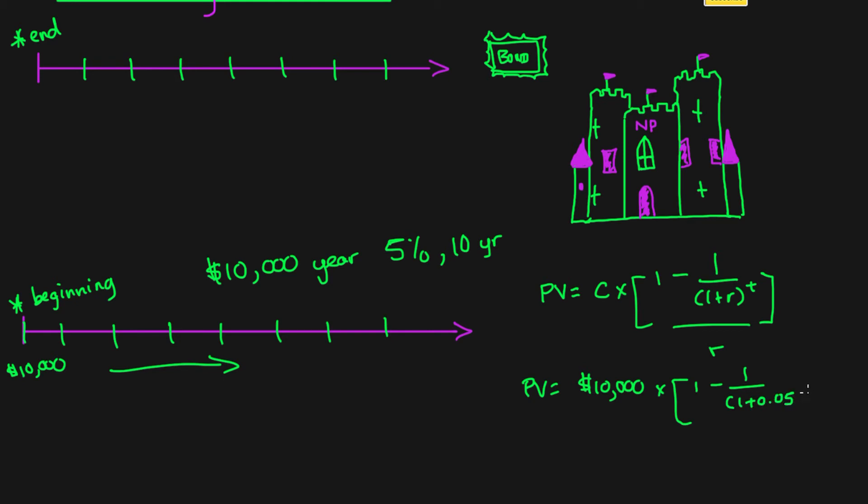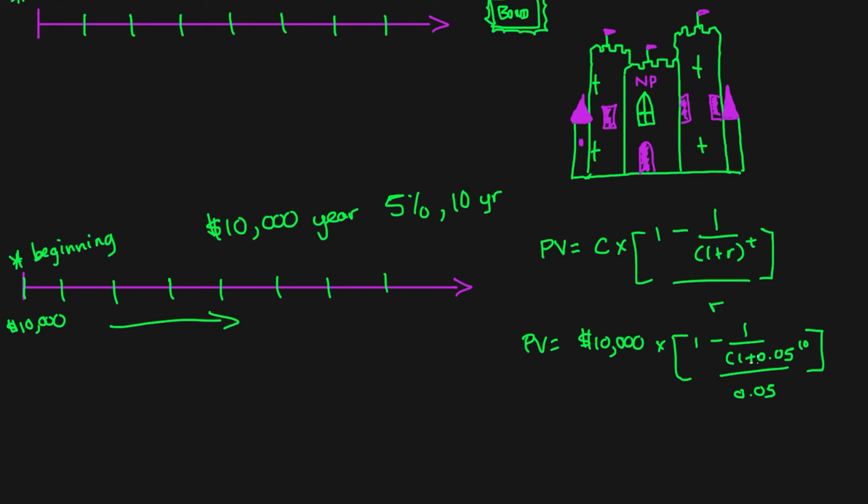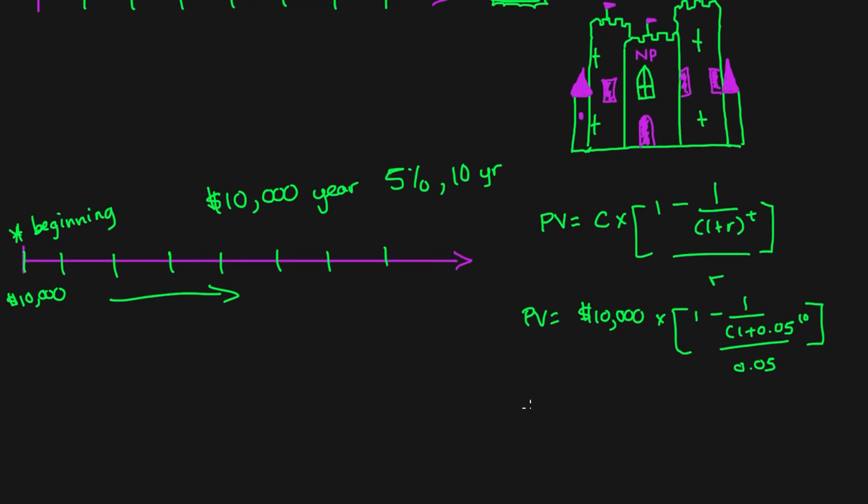This is actually going to work out to be present value equals ten thousand and our annuity due factor, what this stuff on the right will equal, will be roughly 7.72, and that will give us seventy seven thousand two hundred and seventeen if we use further decimals.